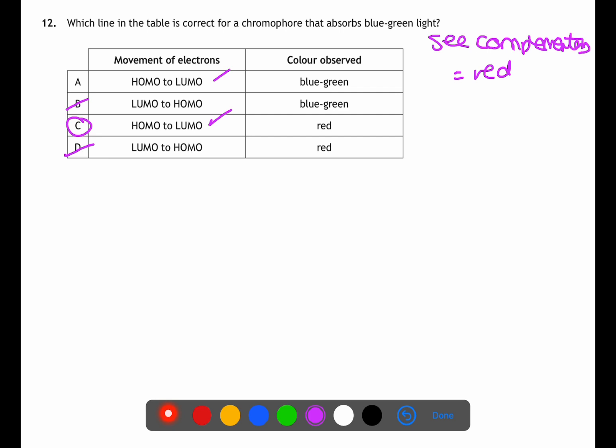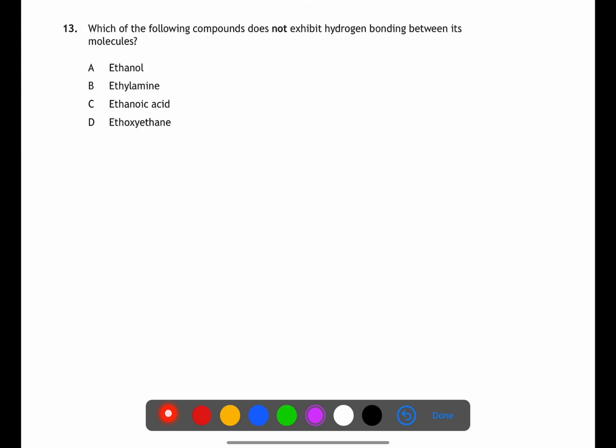Question 13 is testing your knowledge of intermolecular forces and the functional groups present in molecules. For hydrogen bonding to occur we need to have an OH, an NH, or an HF bond. In ethanol you have the hydroxyl group, in ethylamine you have an NH group, in ethanoic acid you have an OH group, but in ethoxyethane, an ether, you have a C-O-C group. There is no hydrogen bonding.